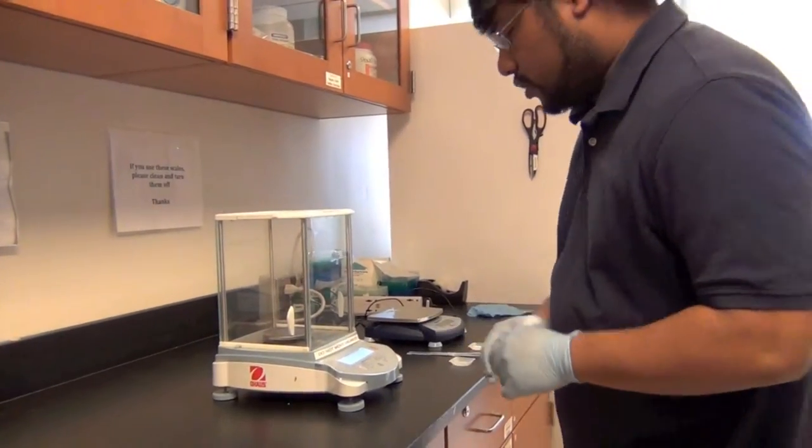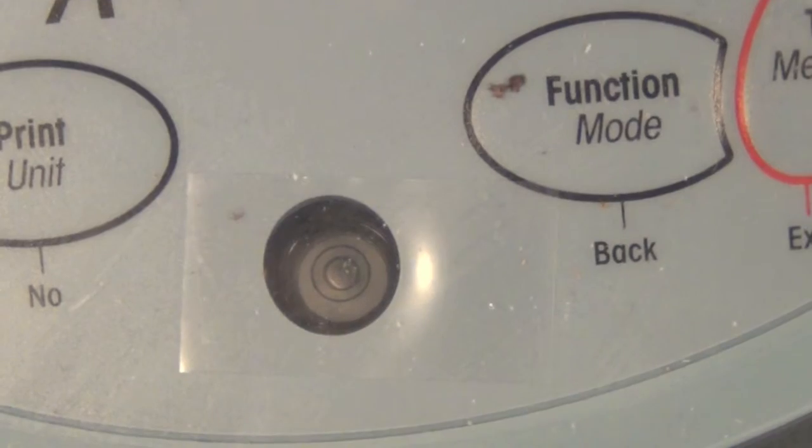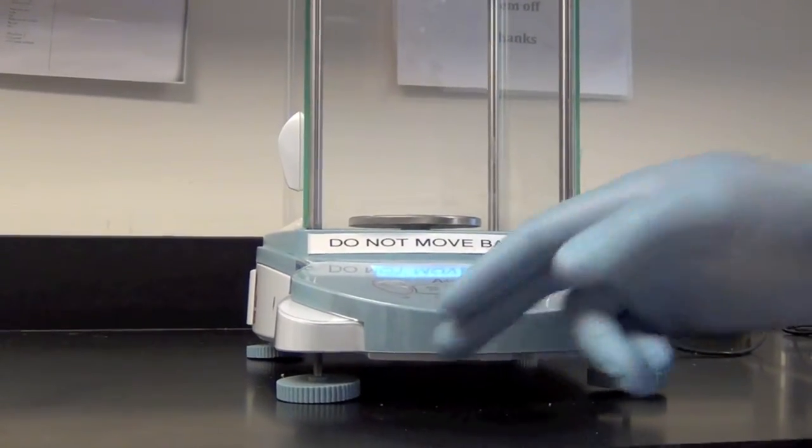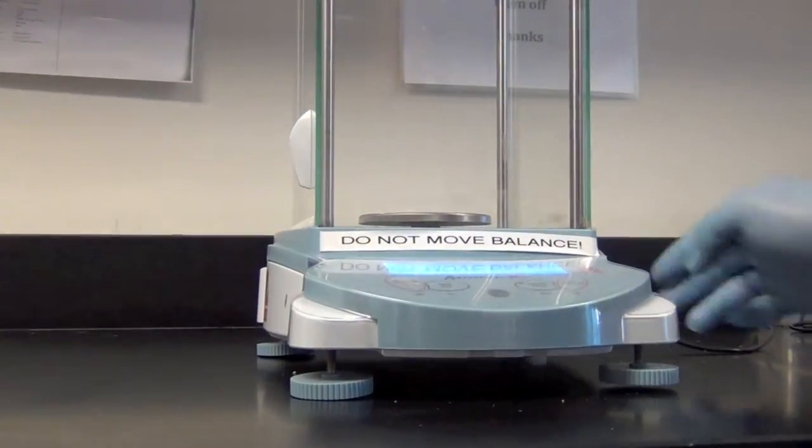The second thing you want to do is make sure that this air bubble here is centered perfectly to get the most accurate reading. If you want to center the bubble, you can adjust these four knobs on each side.